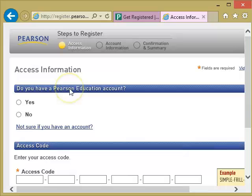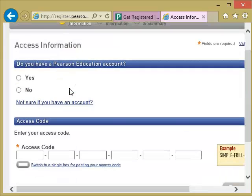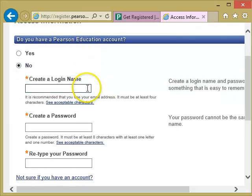Next, you're in to access information. It asks, do you have a Pearson Education account? If you're new, you will say no. Login name. It suggests that you use your email address. I would suggest that you use your uToronto email address for your login name.